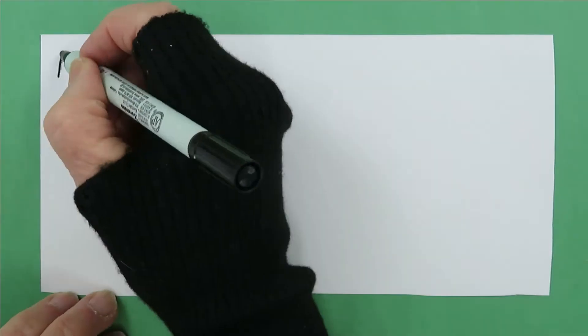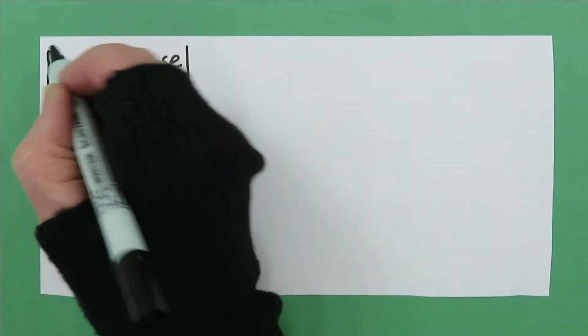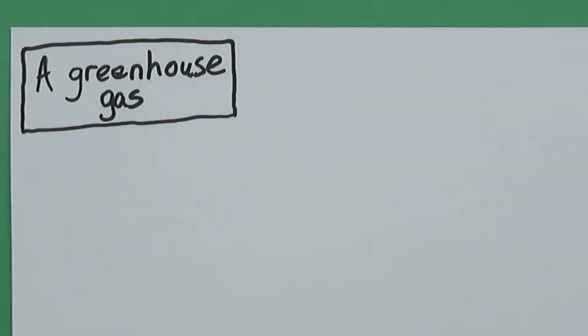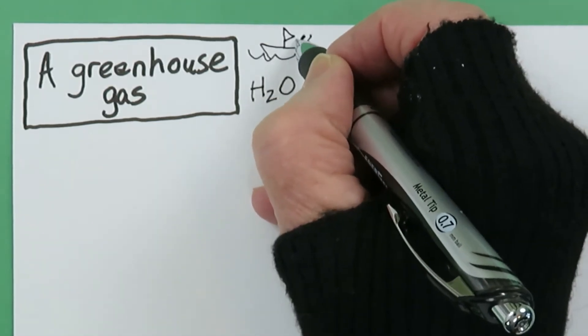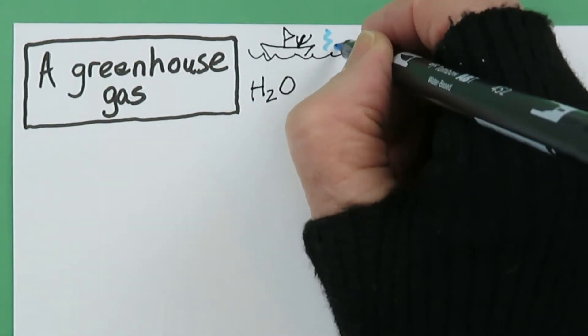Third, CO2 is a special kind of gas called a greenhouse gas. Water is a greenhouse gas. We don't worry too much about it, because water doesn't accumulate in the atmosphere due to the water cycle.